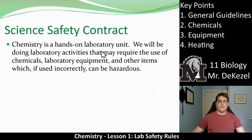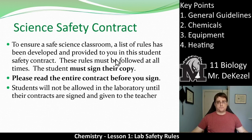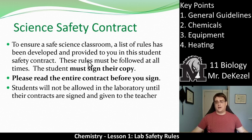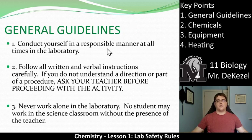At the bottom you're going to sign the contract — it's a contract with me that says you understand these rules and you're going to do your best to follow them at all times. So if there are any accidents and you say you don't know some rules, we'll go back and talk about what rule might have prevented that accident. Chemistry is a hands-on laboratory unit involving chemicals, lab equipment, and items which if used incorrectly can be hazardous, such as Bunsen burners or matches. Students will not be allowed in the laboratory unless their contracts are signed and given to me.